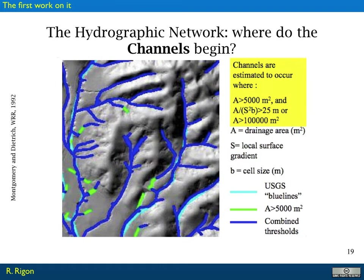They observed they were reproducing the real landscape with a value of 25. They also drew the USGS blue lines — the places where maps available at that time indicated a channel was present. These blue lines were drawn by geographers more or less by experience rather than with an objective criterion for where channels begin.